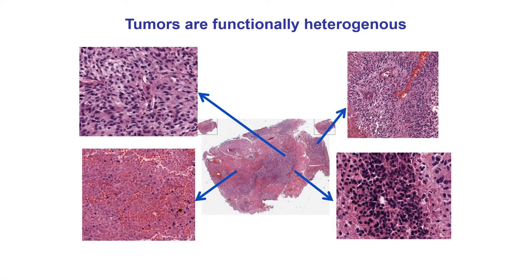It is well known that cancers exhibit extensive heterogeneity in a wide range of phenotypic and functional features. Within a tumor, significant differences can be found between cancer cells in terms of morphological characteristics. These features include cell surface markers, gene expression, proliferative and invasive capacity, and therapeutic response.